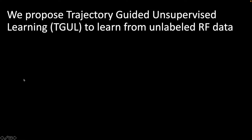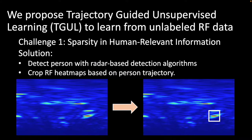To address these challenges and make use of large-scale unlabeled RF datasets, we propose a novel structure, namely a trajectory-guided unsupervised learning framework. To solve the sparsity challenge, we can adapt radar detection algorithms to detect and localize a person, generating a bounding box, and further zoom in on the radio signals which contain the person by cropping the heat maps based on their trajectory.